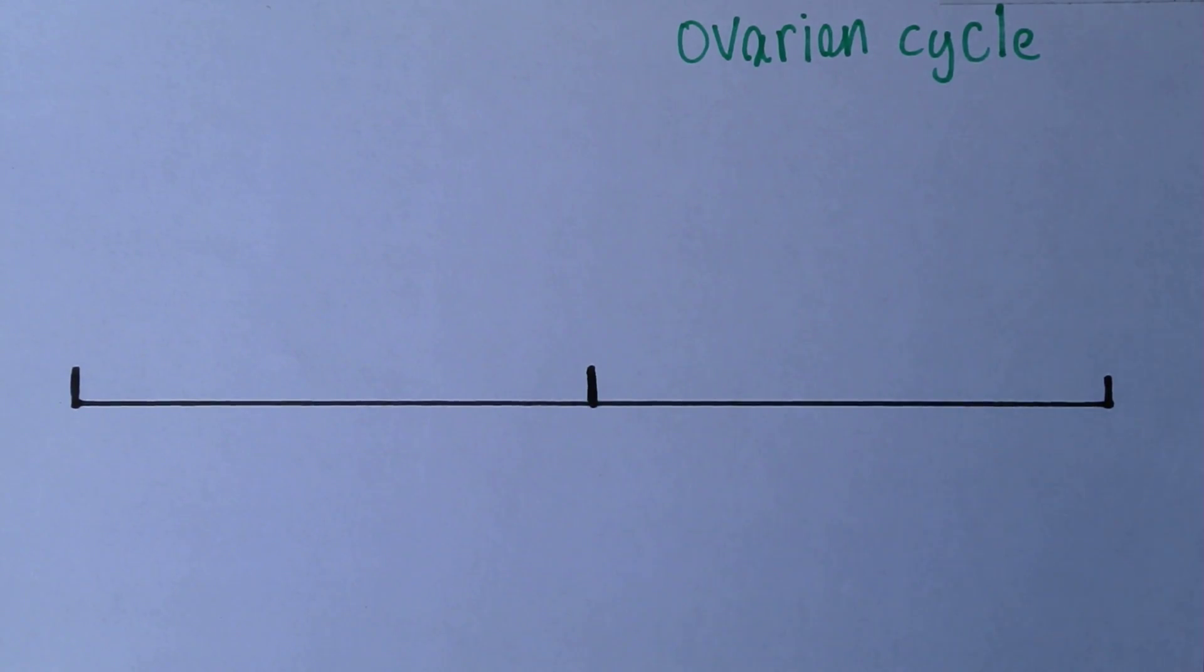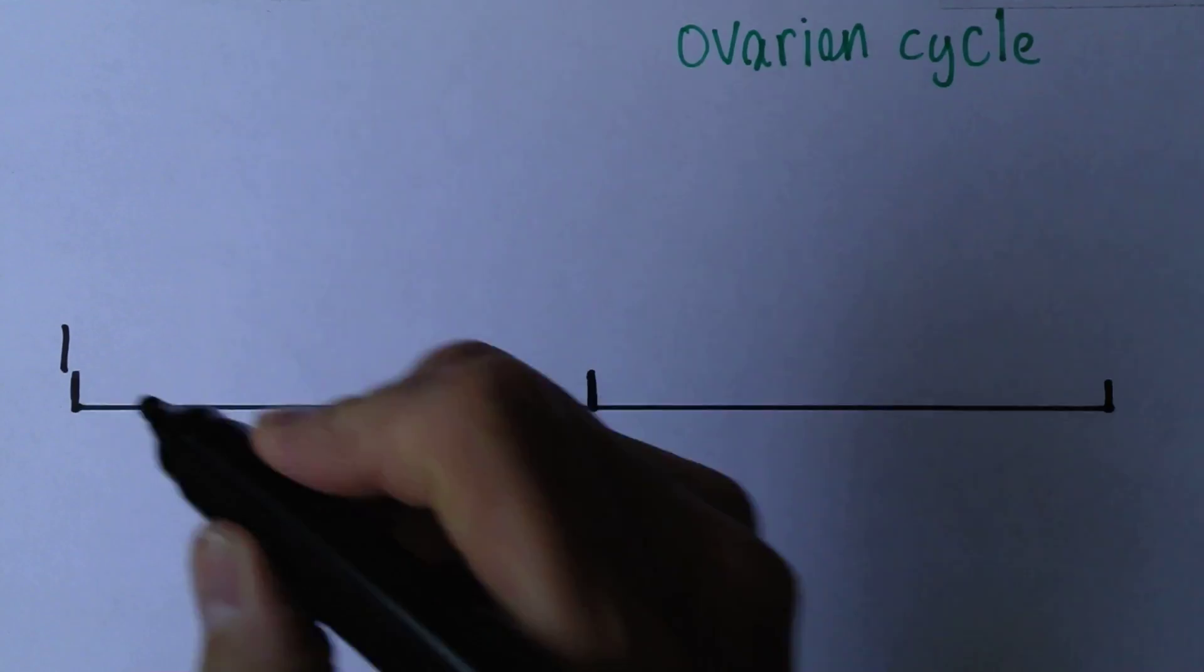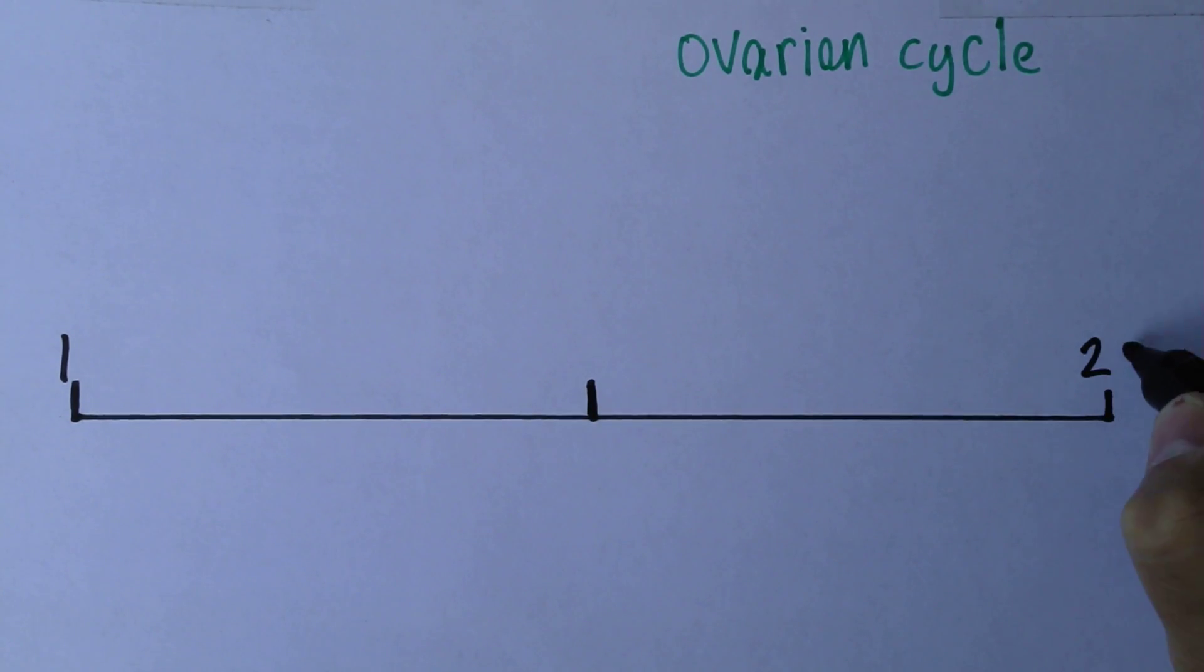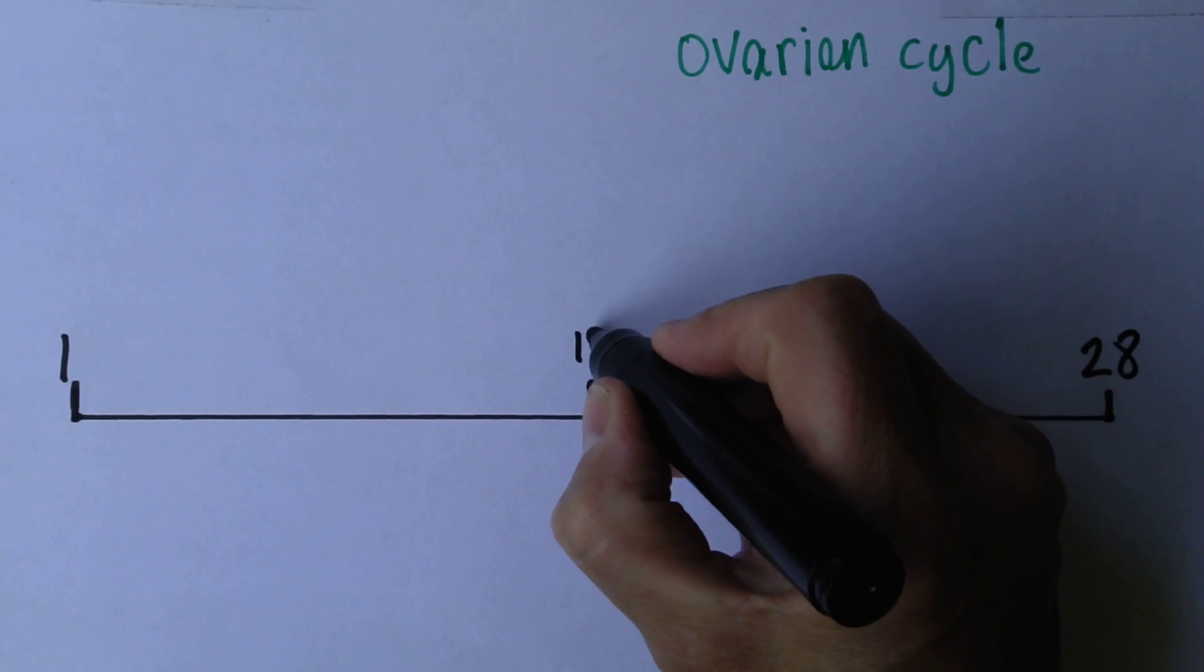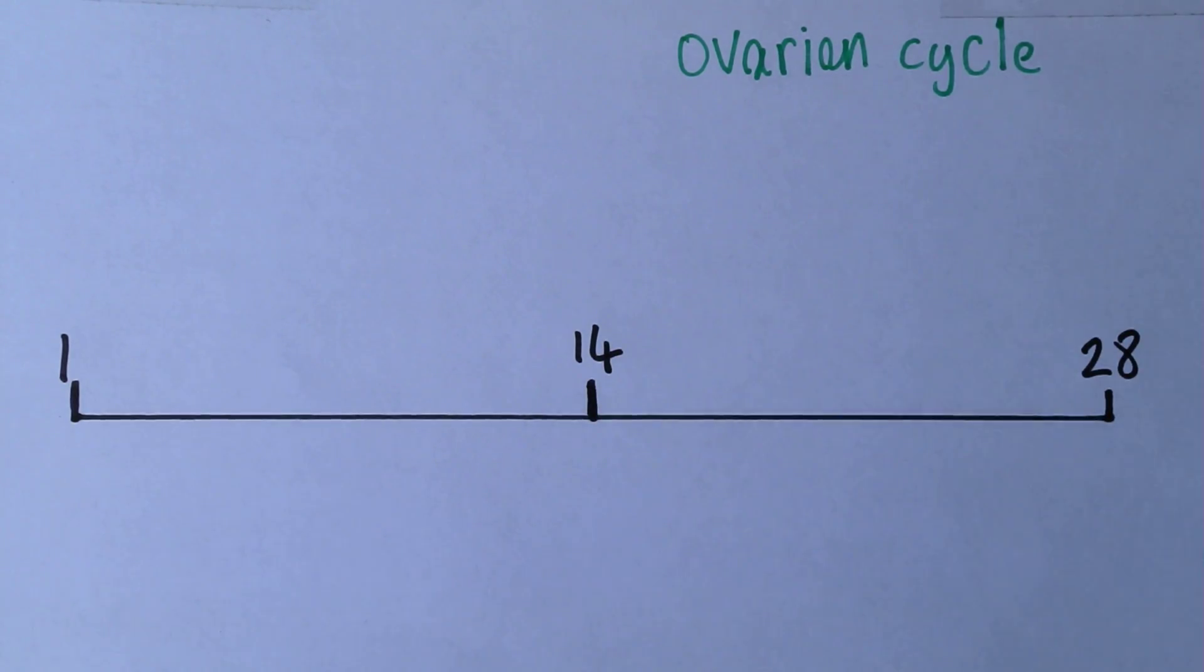So what I've sketched out here is a typical ovarian cycle, also called a menstrual cycle. This cycle goes from day one to day 28, and in the middle we have day 14. We're going to start off by considering an idealized menstrual cycle.